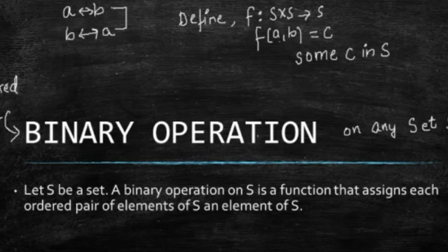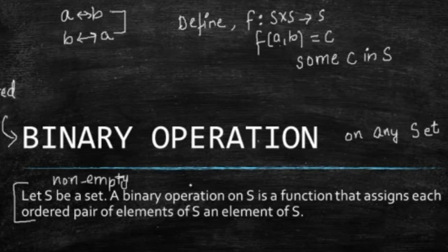So going back to the definition, S being a non-empty set, a binary operation on S is a function. So, binary operations are actually functions, that assigns each ordered pair of elements of S an element of S. And these functions start with Cartesian products and end on S. So, I hope this definition is clear.